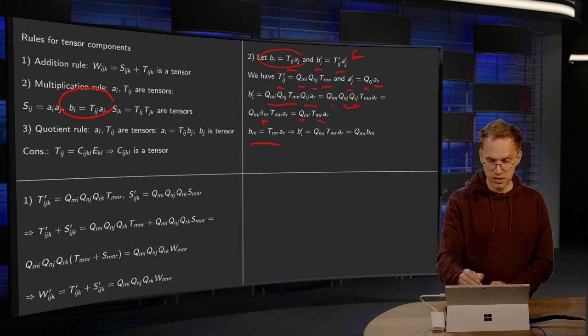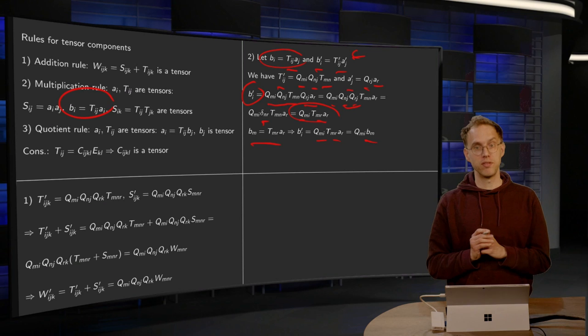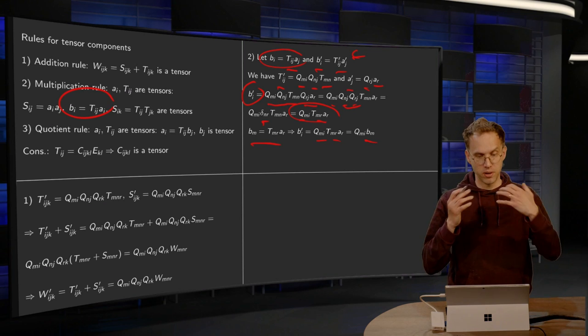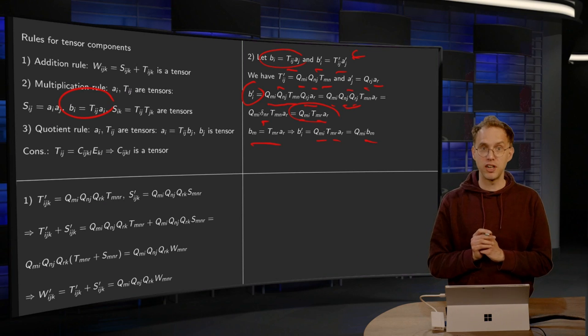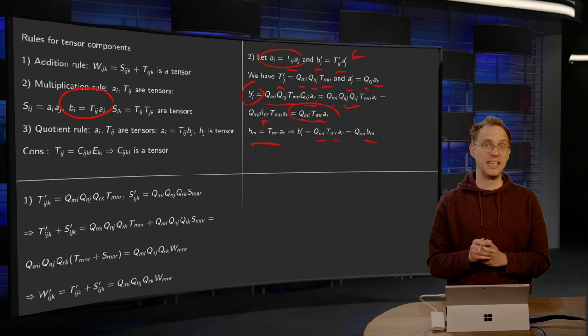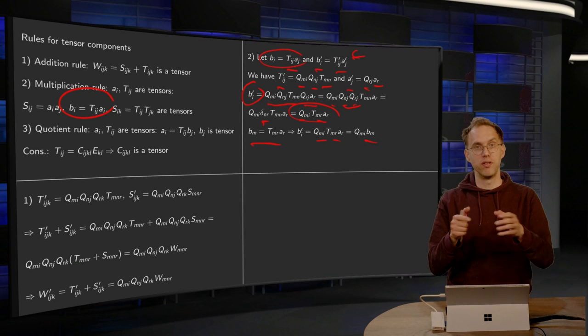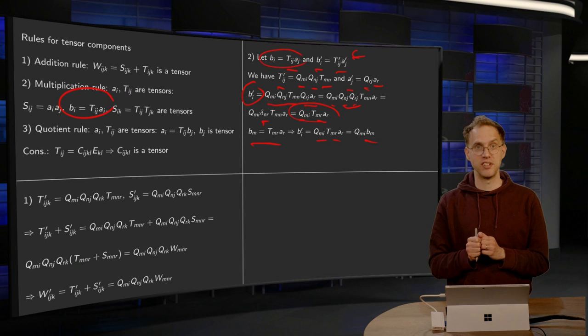So that means that our bi prime equals this Qmi, Tmr Ar, which we had over here. And Tmr Ar was bm, so bi prime equals Qmi bm. So bi prime transforms in the correct way, so the bi prime is a tensor. And you can do all those other products in exactly the same way. So if you take a product of some tensors, you get a new tensor. And the number of indices you are left with is the rank of your new tensor.